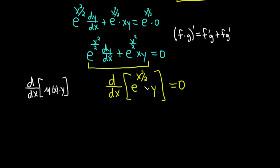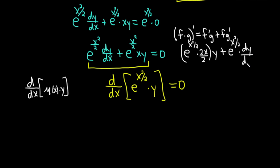Applying that here: the derivative of the first, e to the x squared over two, requires the chain rule — so that's e to the x squared over two times two x over two — times the second, plus the first, e to the x squared over two, times the derivative of the second, which is dy/dx. If you look at what's happening, you have e to the x squared over two times xy, and e to the x squared over two times dy/dx — exactly what we had. It's perfect.